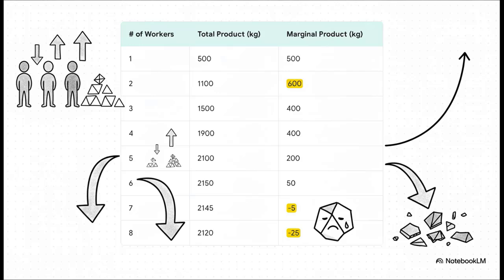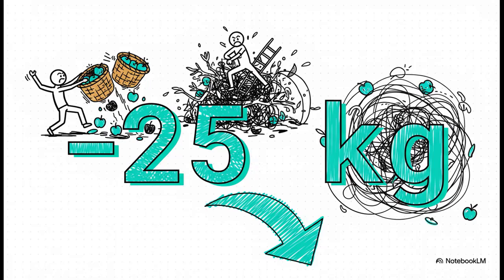That's where things get wild. The eighth worker's marginal product is negative 25 kilograms. Let that sink in. This person didn't just add less than the others. Their presence actually made the total harvest go down. They were getting in the way, maybe knocking over baskets. Whatever it was, they made the entire operation less productive. That is diminishing returns in action.